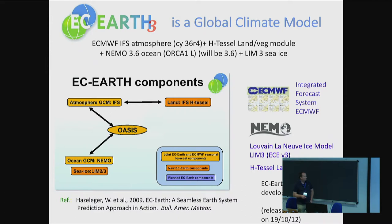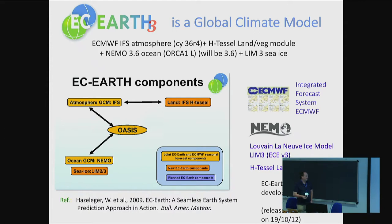There is a lot to be gained from parallel development and not having to solve the same issues over and over again. As a GCM, EC-Earth needs an ocean. It uses NEMO. It makes a particular choice for the sea ice model, which is LIM3. And for land, coming from IFS, it uses H-TESSEL. This is the GCM.